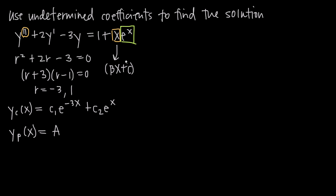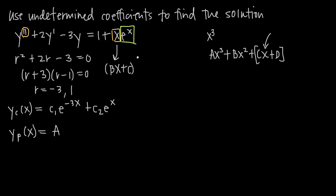The reason our guess for x is bx + c is that whenever we have a polynomial function, we always include terms of lesser degree. For example, if we had x cubed, we'd guess ax³ + bx² + cx + d. Here we were given x, so we include bx + c. Our guess for e^x would be de^x, but since b and c are already used, we call it de^x.